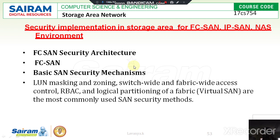Now I am going to explain about the FC SAN security architectures. The FC SAN — which is nothing but the Fiber Channel Storage Area Network — basically depends on the internet protocol network. This IP network uses many number of addresses, such as MAC addresses, to provide information to the destinations or targets.